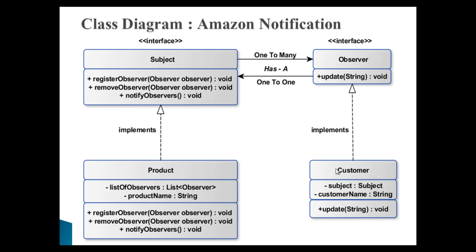The Product class implements the Subject interface, and the Customer class implements the Observer interface. You can see that Subject and Observer have a one-to-many relationship. Each Subject can have many observers, and each Observer has one Subject to which it listens.